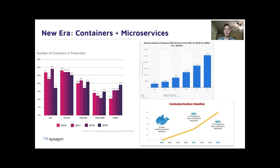From pre-production, we then witnessed the rise of containerized applications in production environments across the enterprise. Gartner research has shown that by 2023, more than 70% of global organizations will be running more than two containerized applications in production. This may not sound like a lot, but that's actually up from less than 20% in 2019, which is an absolutely massive paradigm shift.